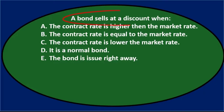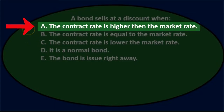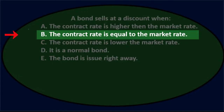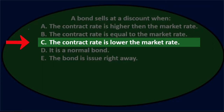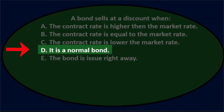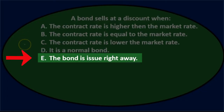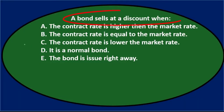First question: a bond sells at a discount when — A) the contract rate is higher than the market rate, B) the contract rate is equal to the market rate, C) the contract rate is lower than the market rate, D) it is a normal bond, or E) the bond is issued right away. We'll go through the process of elimination.